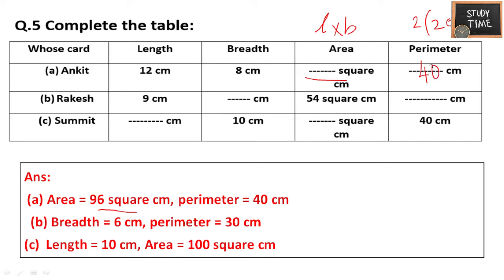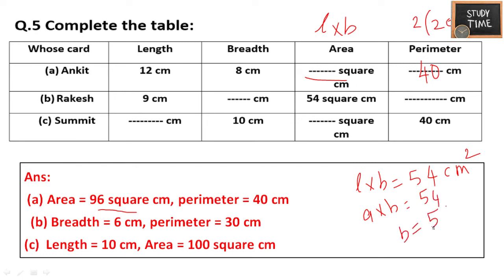For Rakesh's card: L into B = 54 square centimeters, and L is 9. So B = 54 divided by 9 = 6 centimeters. Perimeter = 2 into (L plus B) = 2 into (9 plus 6) = 2 into 15 = 30 centimeters.